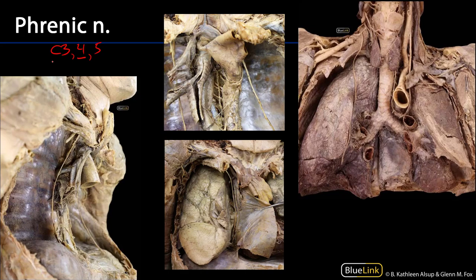Recall that in the root of the neck we can see the phrenic nerve in close association with the anterior scalene muscle, and then it dives down into the thoracic inlet and is going to run between the lungs and the pericardium. So we can see the phrenic nerve here. It's generally accompanied by branches of the internal thoracic artery — the pericardiacophrenic artery — as well as the pericardiacophrenic veins, which are draining into the internal thoracic vein.